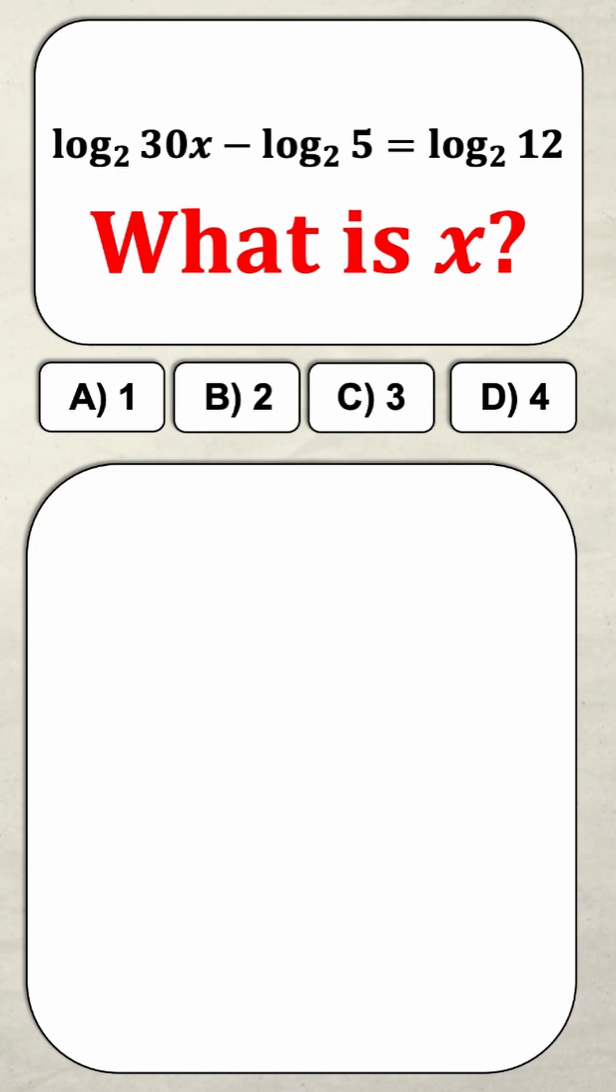So here we have log base 2 of 30x minus log base 2 of 5 is equal to log base 2 of 12. Now the nice part about this question is that even though it may look difficult, you'll see that they're all the same base.